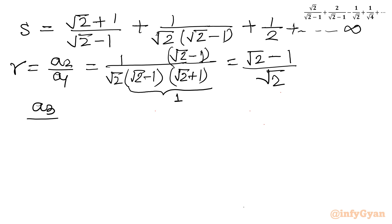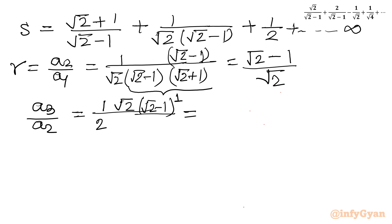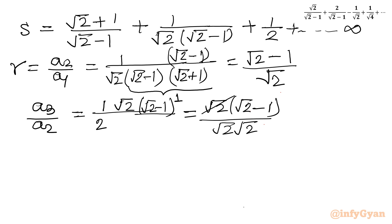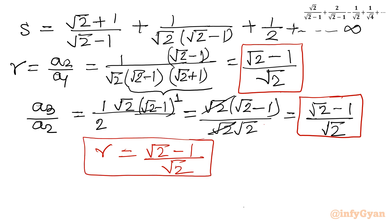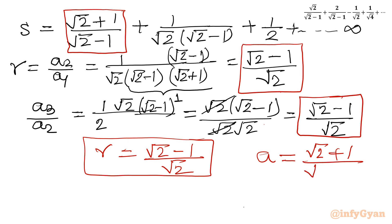Confirming with A3/A2: (1/2) divided by [1/(√2(√2−1))]. Writing this out gives √2(√2−1)/2, and with denominator root2·root2, numerator and denominator cancel appropriately, matching R = (√2−1)/√2. So the common ratio is confirmed as (√2−1)/√2, and the first term A is (√2+1)/(√2−1).